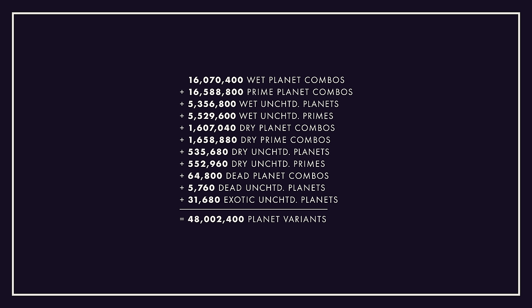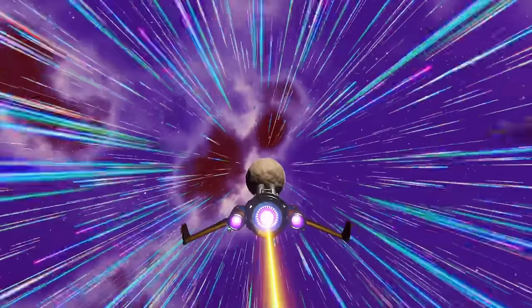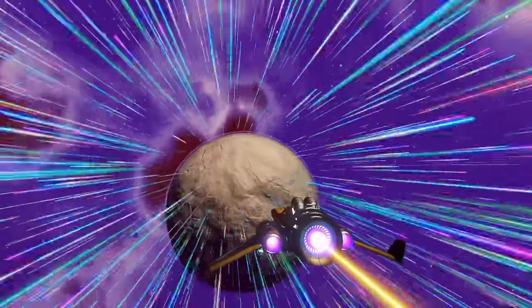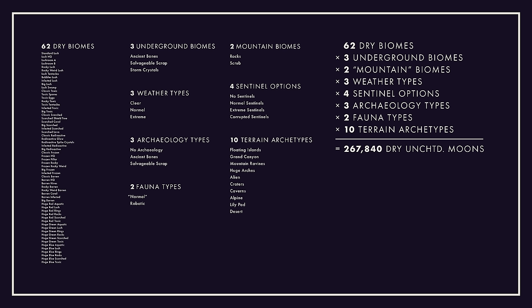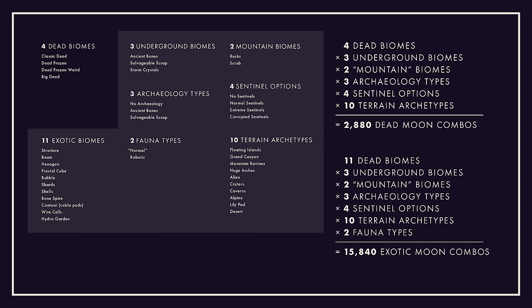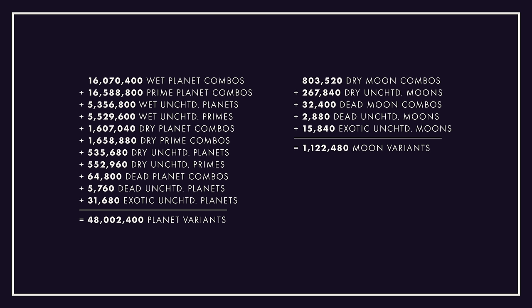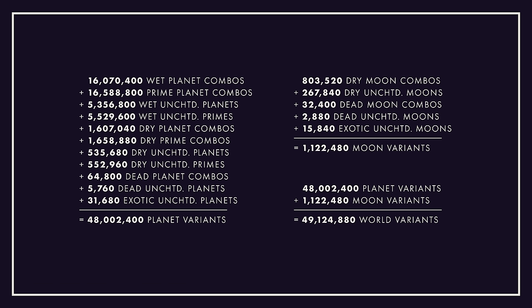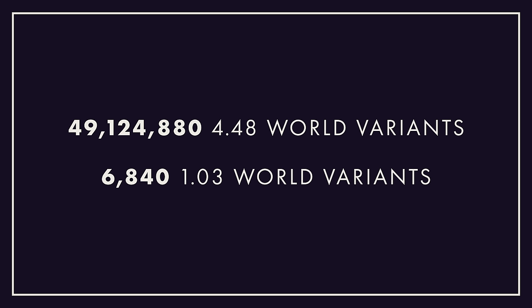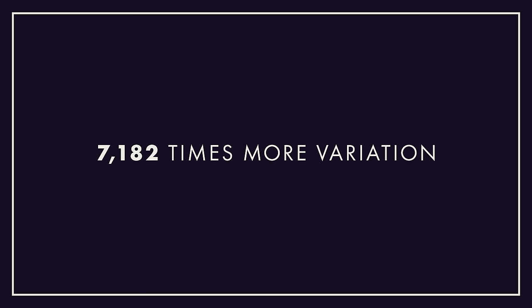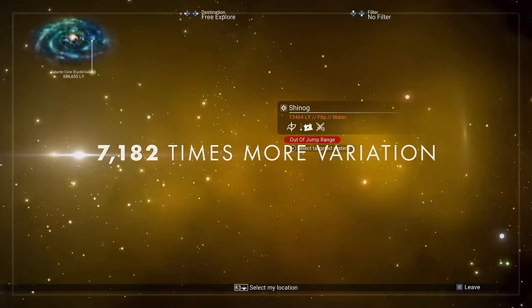Adding all of those up, we have 48,002,400 planet variants according to our criteria. That's almost unfathomably larger than the 3,420 planet variants at launch. Moons also have greater variety in 2024, though nowhere near as much as planets since moons never have bodies of water or rings. All the moon equations combined give us 1,122,400 moon variants. Add that to the planets and there are 49,124,880 world variants as of No Man's Sky version 4.48.